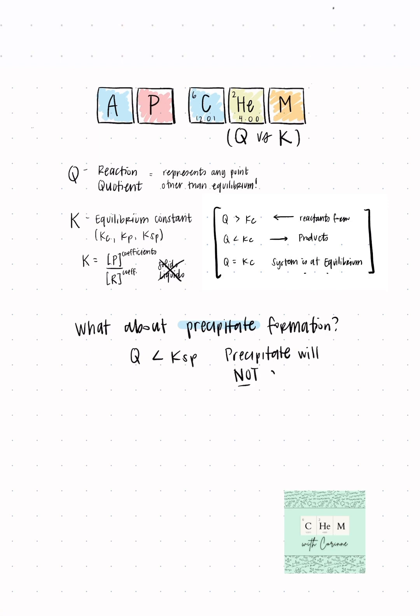So if Q is less than Ksp, this means that a precipitate will not form in the solution because the solution is unsaturated, which is confusing, right? Because if Q is less than Ksp, you'd think that we'd be forming the products. And we do.